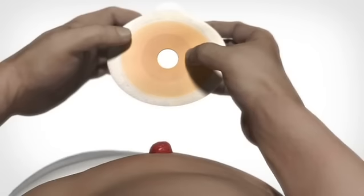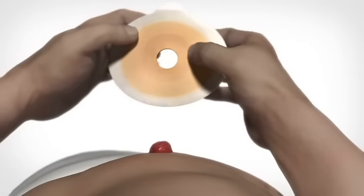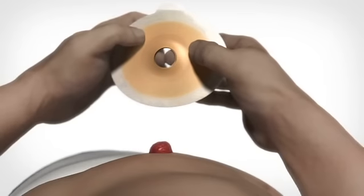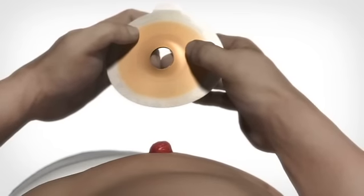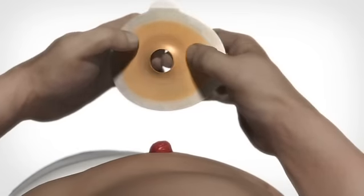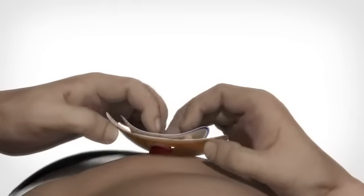When applying the adhesive to the skin around the stoma, it must make full contact with the skin. Before applying the adhesive to the skin, form the edge of the hole in the adhesive to a spout shape to face the skin.